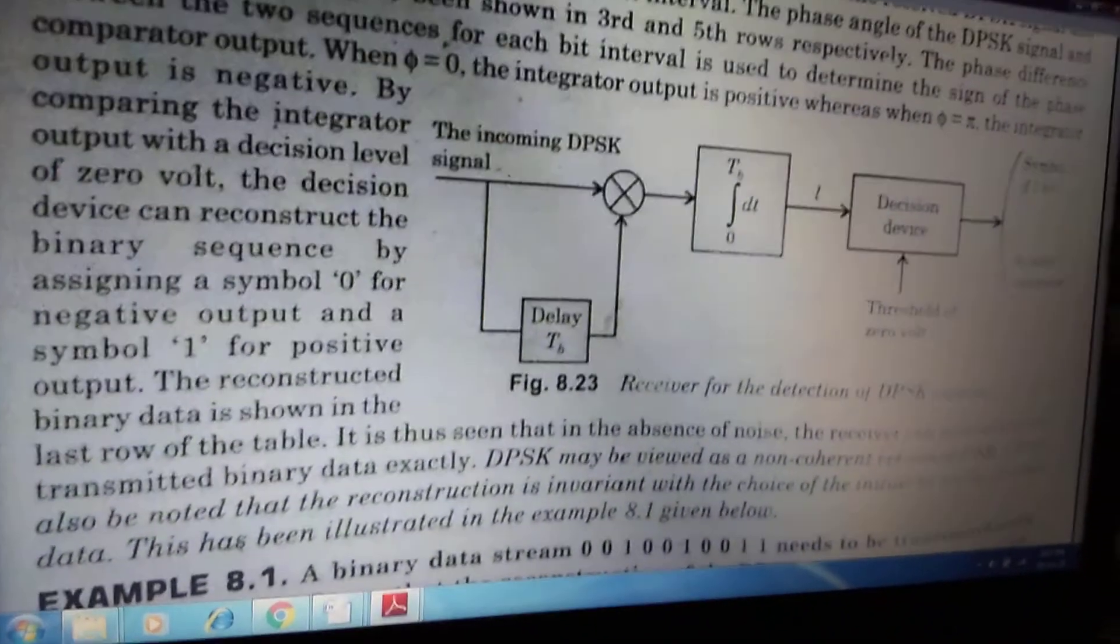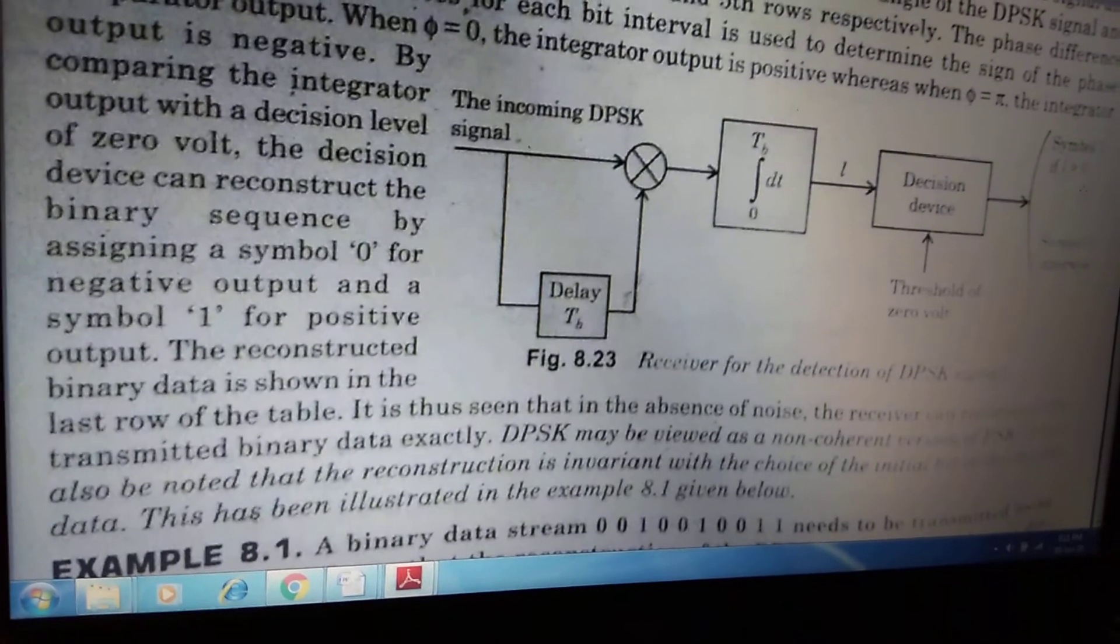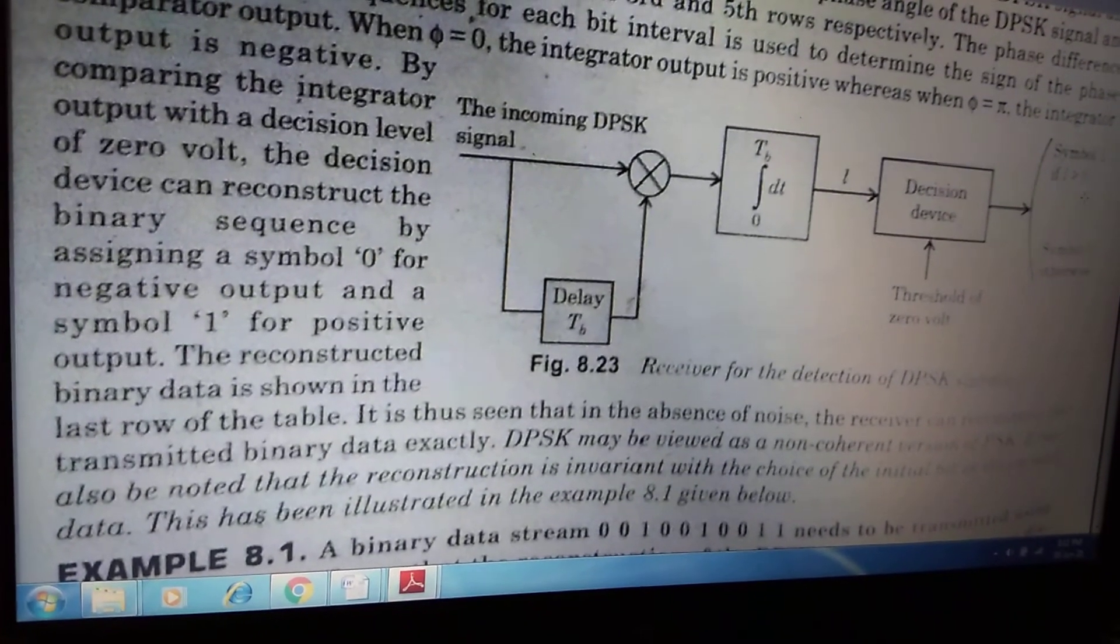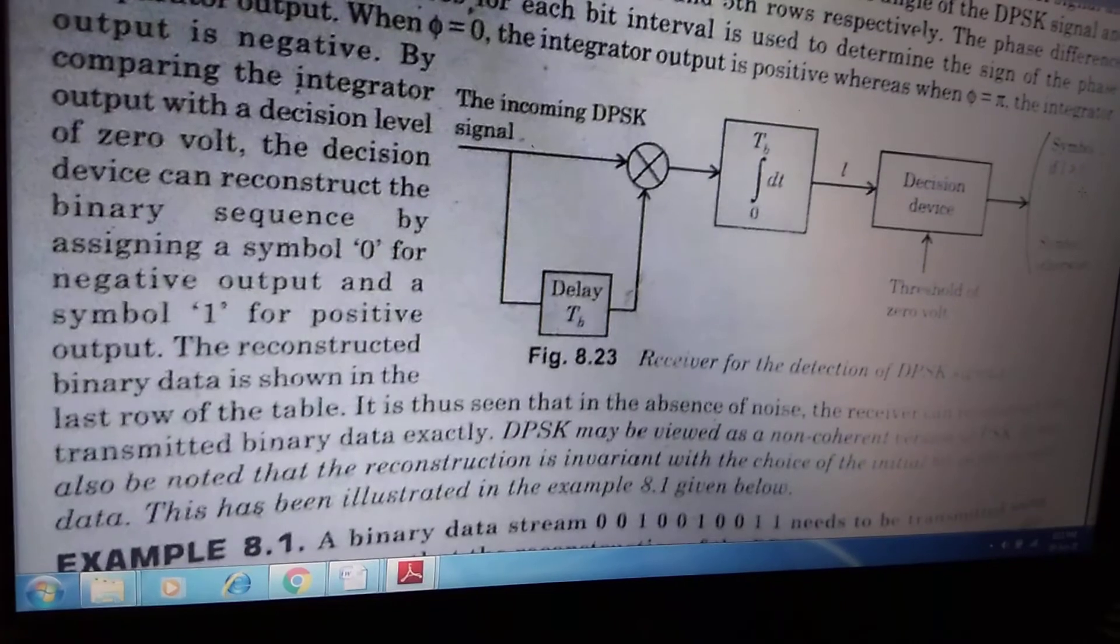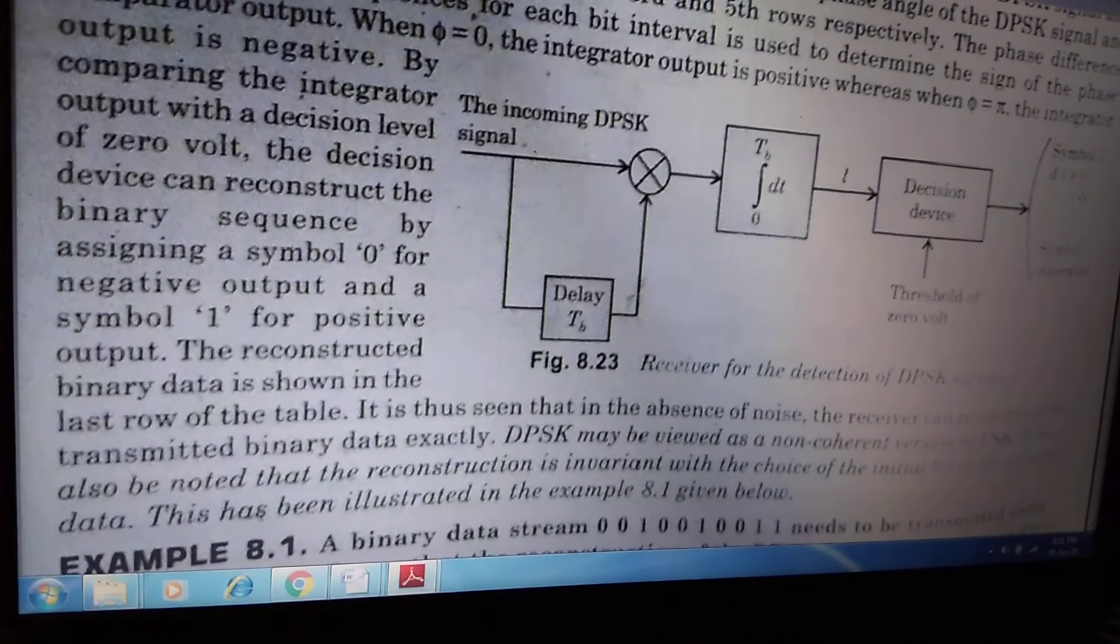So if we get the symbol 1, then if l, that means the small l is greater than 0, that means we are getting the symbol 1. If small l is less than 0, that means we are getting the 0.